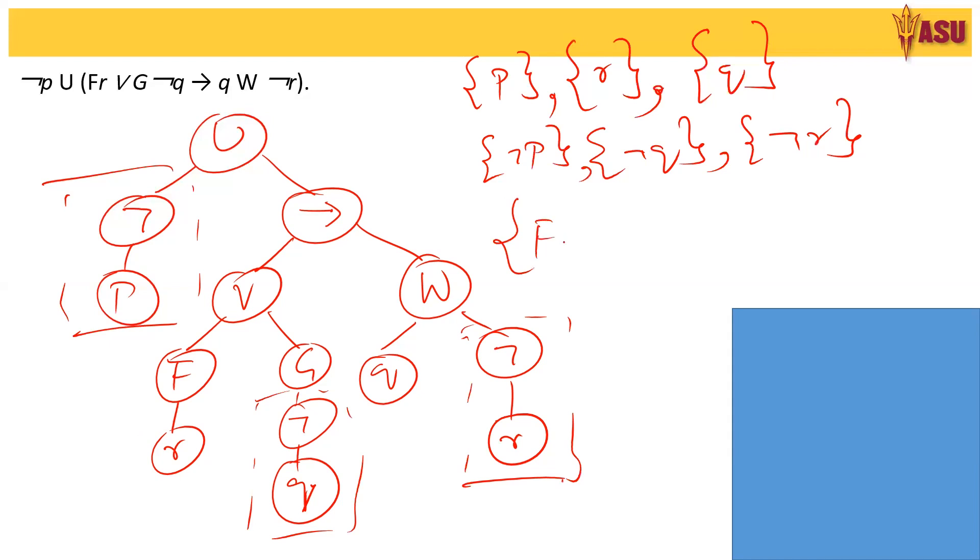Now the next part, we have F R, in future there is an R. Globally, there is no Q. So that completes this entire part and this part. Now we go to the R. So the next is F R R G NOT Q. And the other one is with respect to the V, NOT R.